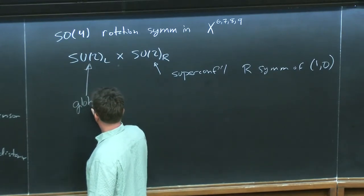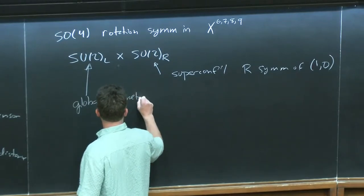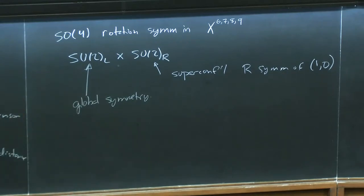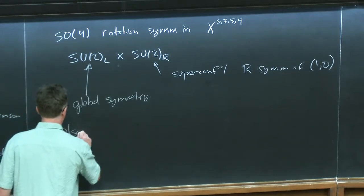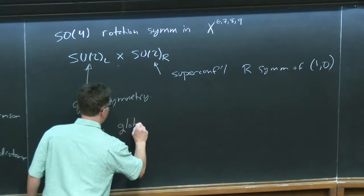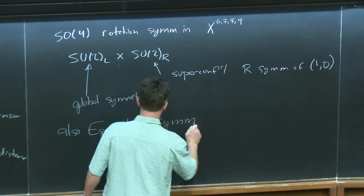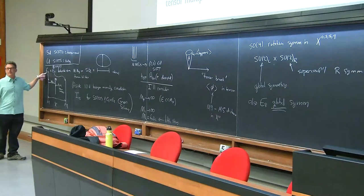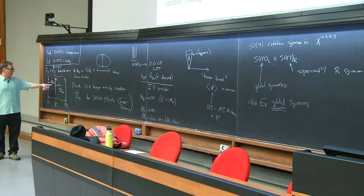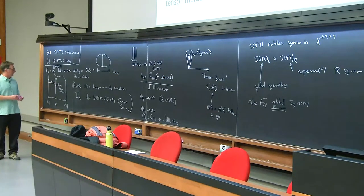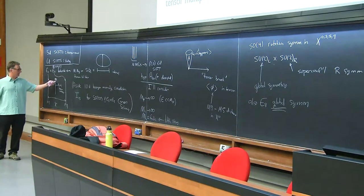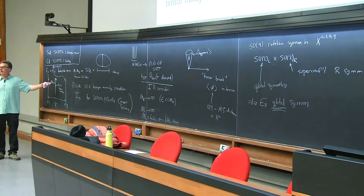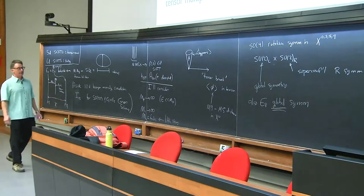So (1,0) supersymmetry has an SU(2) R-symmetry, and this SU(2)_L is just a global symmetry from the point of view of (1,0). There's also an E8 global symmetry. The reason it's a global symmetry is that from the original theory's point of view it was a gauge symmetry in ten dimensions, but from the point of view of the theory living on the brane it becomes global: in the decoupling limit the E8 gauge fields decouple and become background fields, but they still couple to conserved currents on the worldvolume.